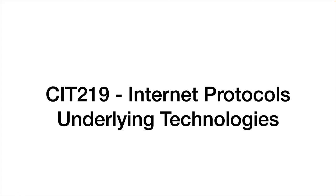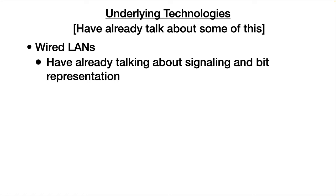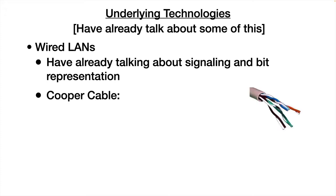This lecture is entitled Underlying Technologies. These are some of the underlying technologies, a lot of this at layer one and some at layer two of the OSI model. We have talked about some of this already. We may have a wired LAN — we've already talked about that, about signaling and bit representation on the media. We didn't talk a whole lot about the media other than to say it was copper and that we use electrical signals when talking about copper cable.